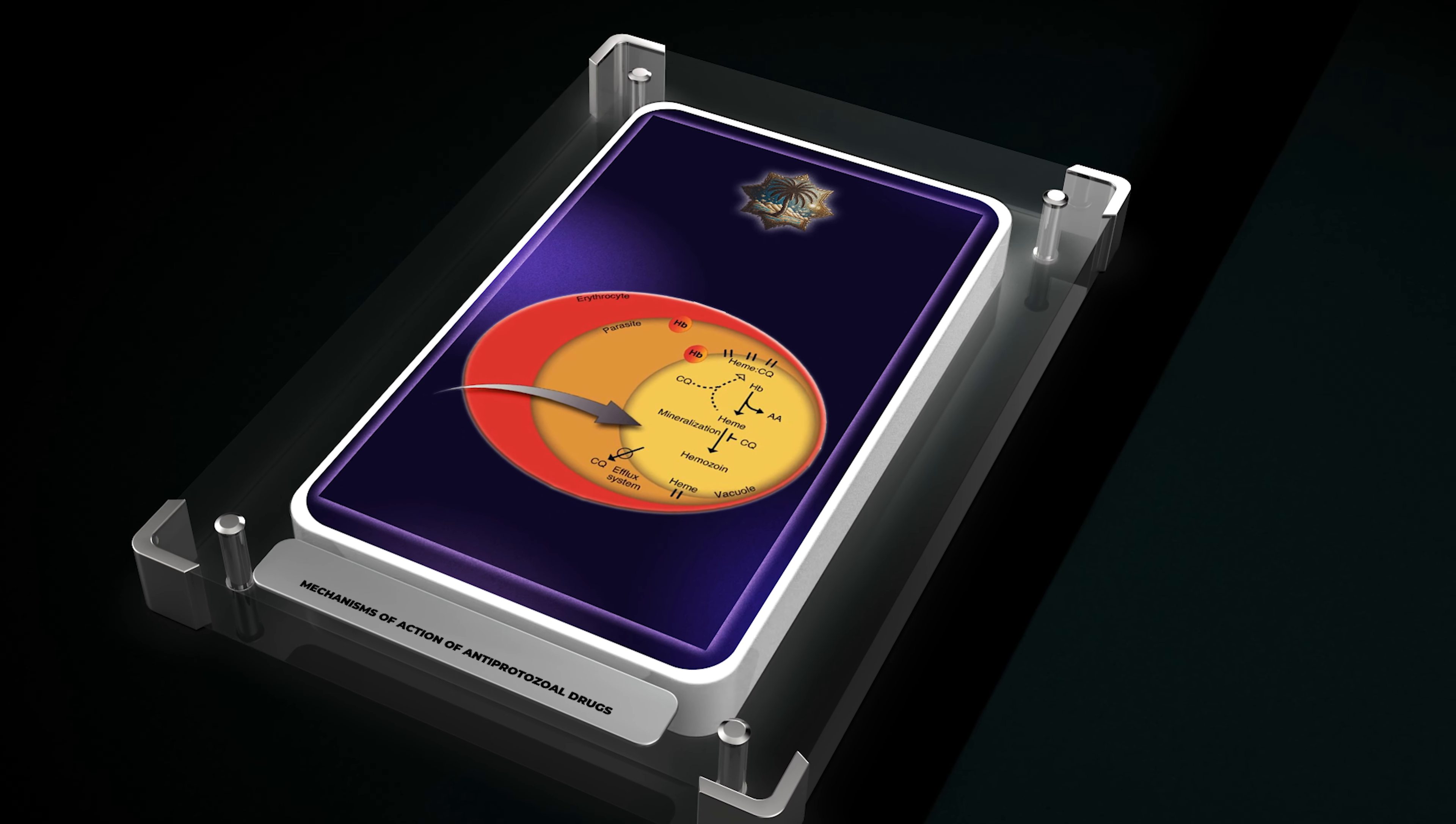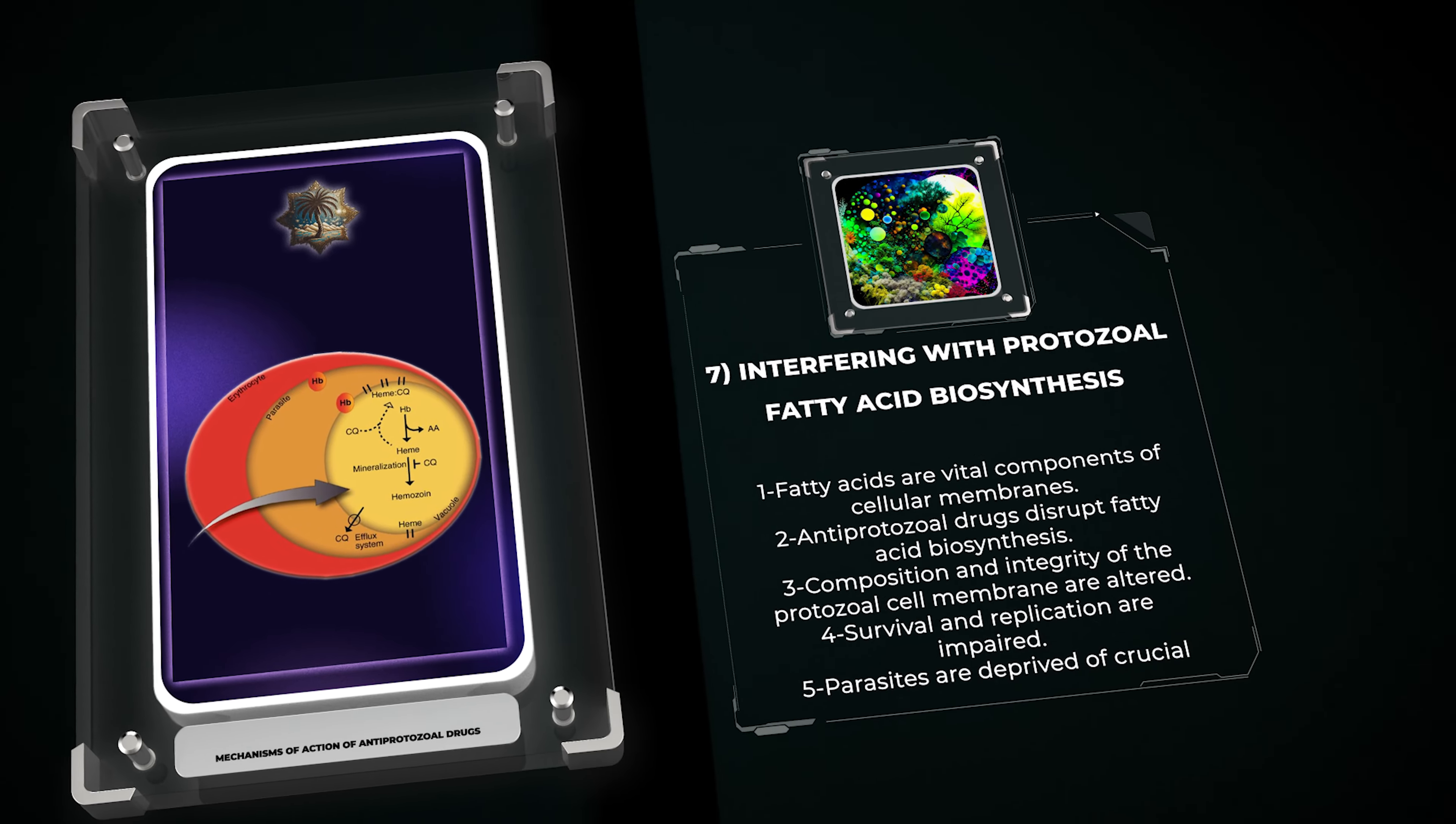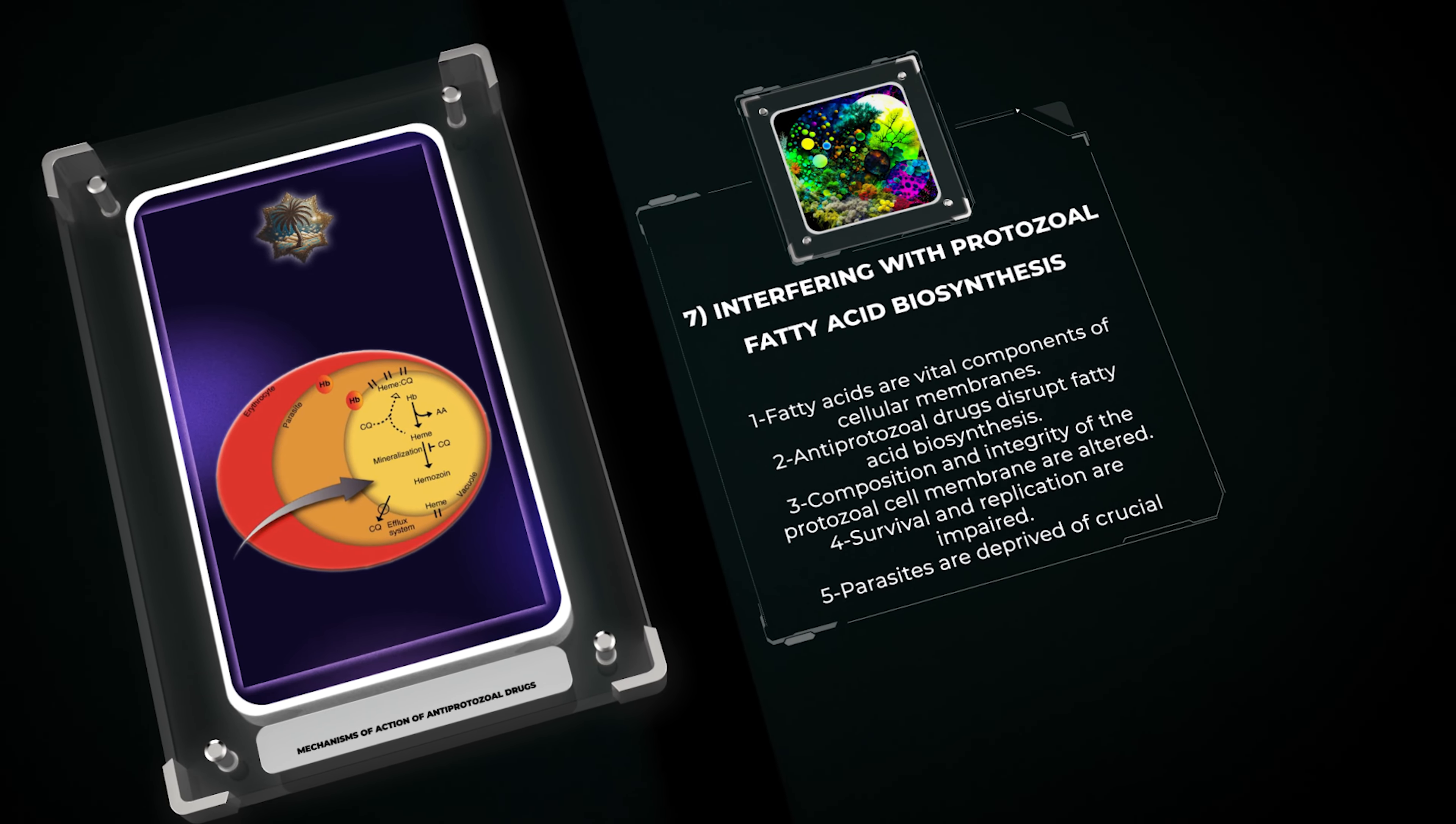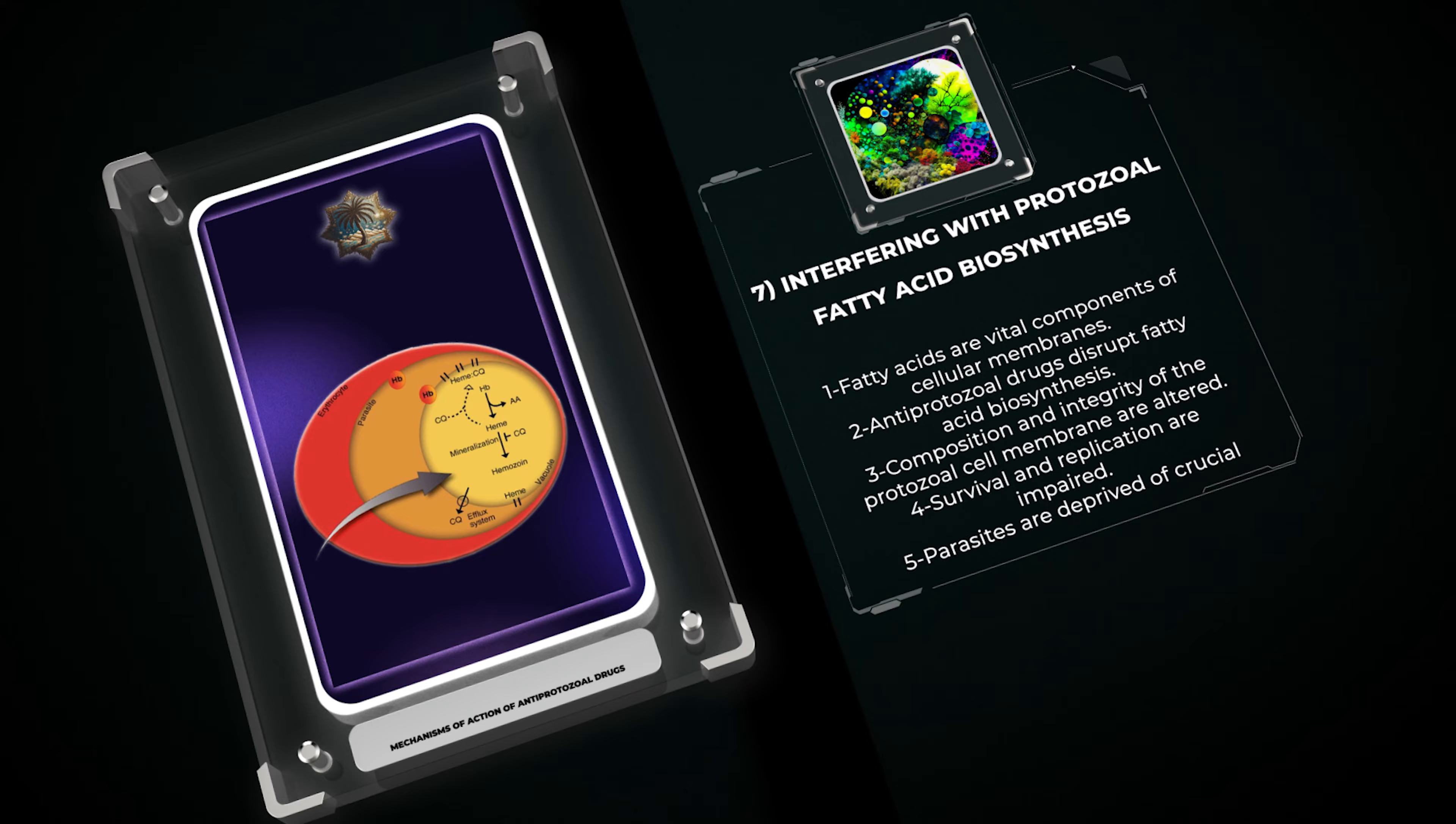Fatty acids are vital components of cellular membranes and serve as energy stores in protozoa. By interfering with the biosynthesis of fatty acids, antiprotozoal drugs disrupt vital cellular processes. This disruption alters the composition and integrity of the protozoal cell membrane, leading to impaired survival and replication. Additionally, the inhibition of fatty acid biosynthesis deprives the parasites of a crucial energy source, further hampering their growth.